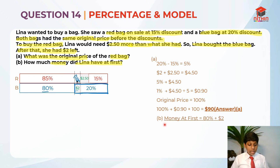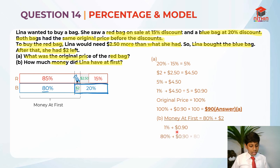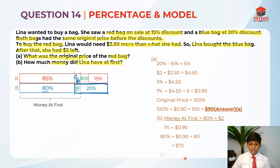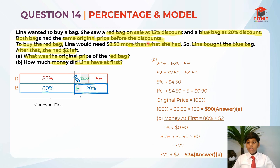Money at first is basically 80% plus $2. We know that 1% is 90 cents, so we take 90 cents times 80, because 80% equals 90 cents times 80, which gives us $72. So 80% is $72. Because the money at first is 80% plus $2, and 80% is $72, we take $72 plus $2, which is $74. So $74 is the answer for part B. I hope you understand my explanation for this question, part A and part B.